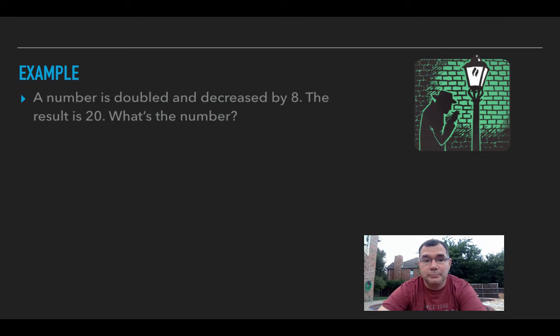As an example, let's say we have a number, and that number is doubled and decreased by 8, and the result is 20. What's the number?